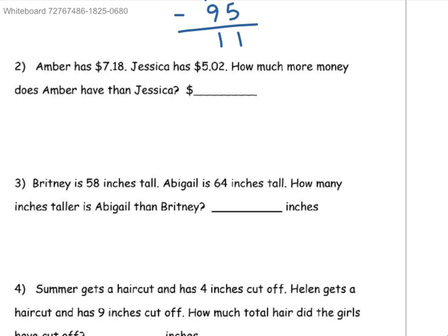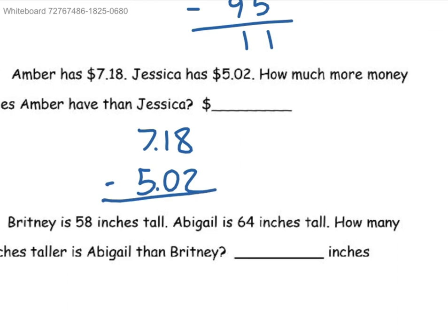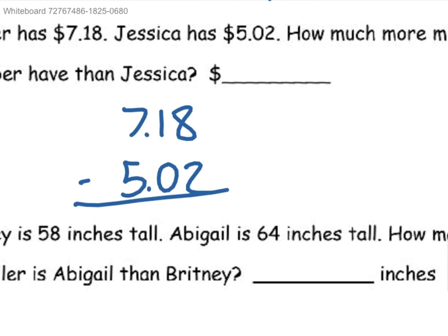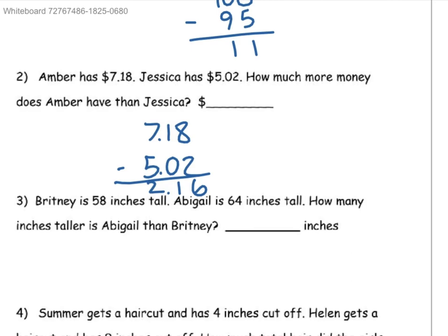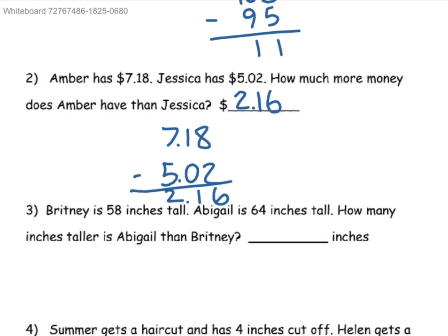Amber has 7 dollars and 18 cents. Jessica has 5 dollars and 2 cents. How much more money does Amber have than Jessica? So 7.18 minus 5.02. So 8 take away 2, that would be 6. 1 minus 0 is 1. You put the decimal point. 7 minus 5 would be a 2. So Amber has 2 dollars and 16 cents more than Jessica.